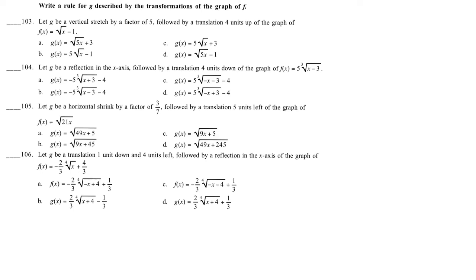Okay, write a rule described by the transformation. Let G be a vertical stretch by a factor of 5. That's 5 times f(x), followed by a translation up 4.